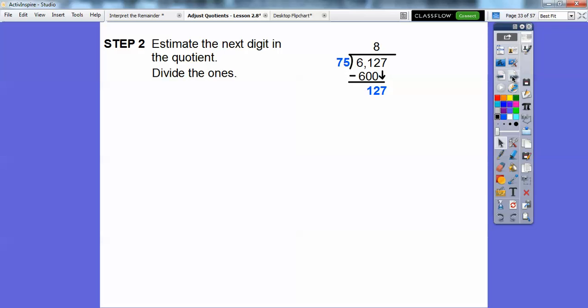75 rounded to 70, and 127 rounded to 140, we get 2. So let's try 2. If I rounded that to 80, I would have rounded this one to 160 or 80. It depends on how you're rounding, but at least you get a general idea where you're placing numbers. 75 times 2, if we get 150, 127 minus 150—we can't do that. We're going to have to adjust it and try 1, not 2.